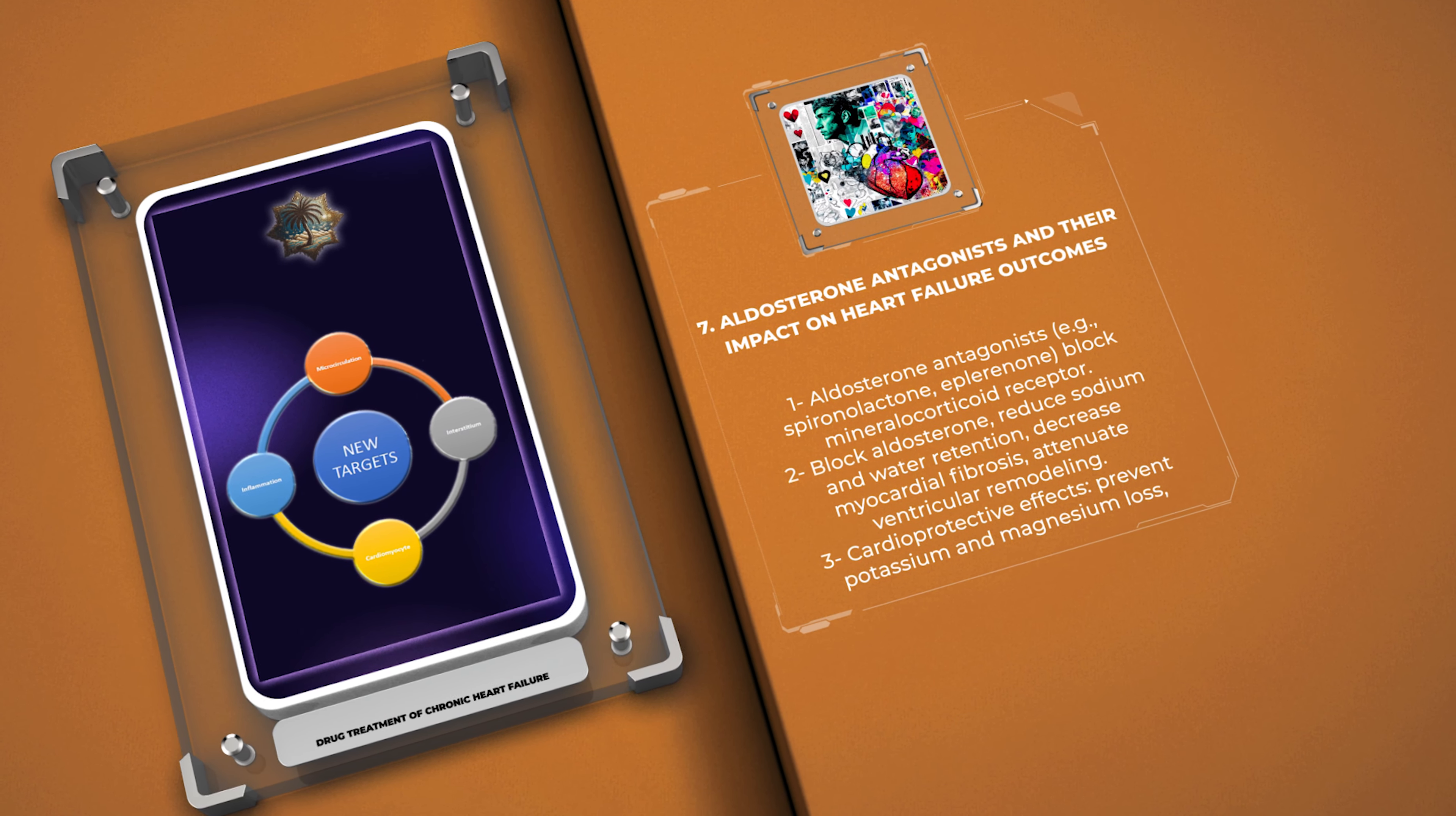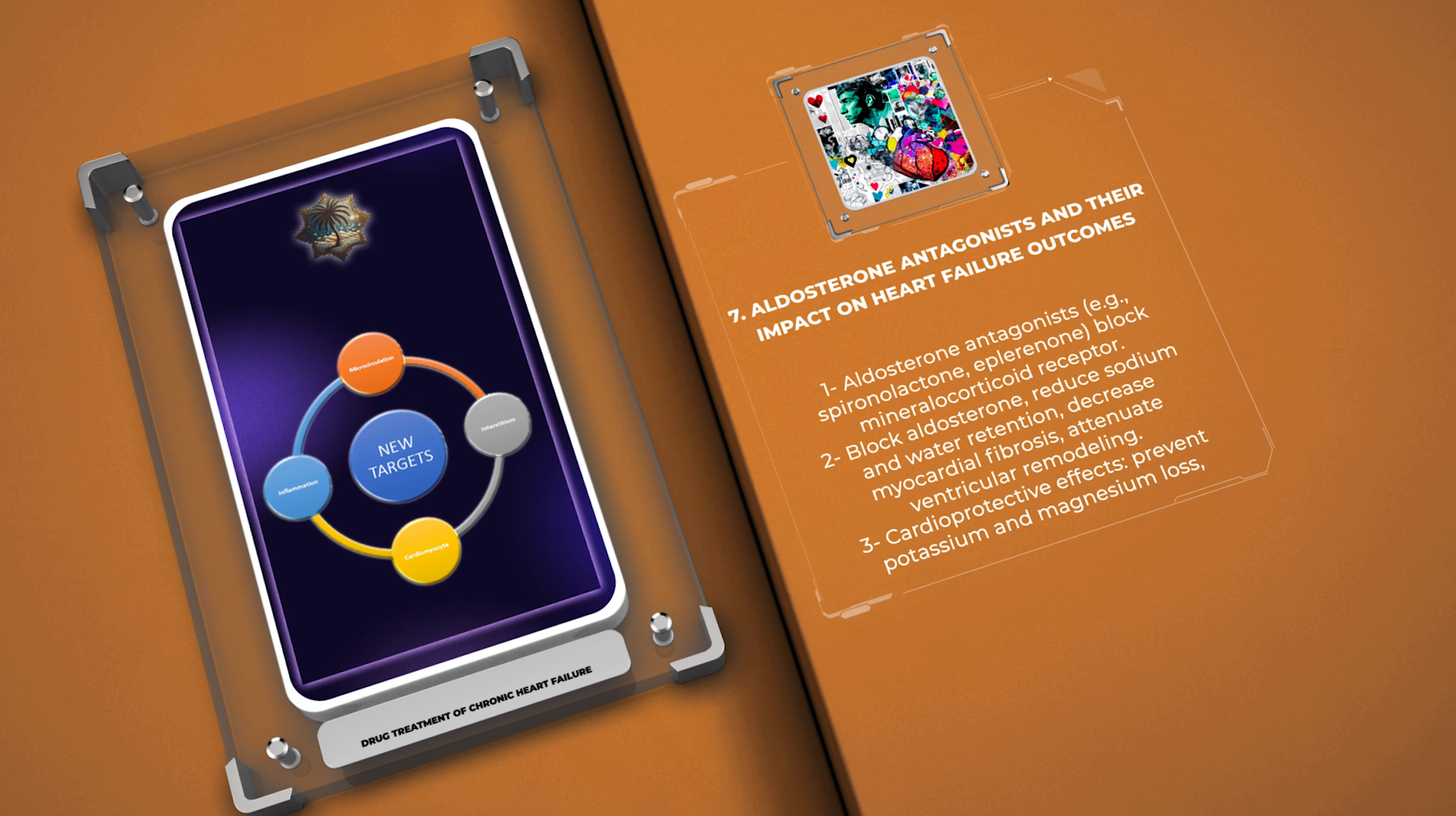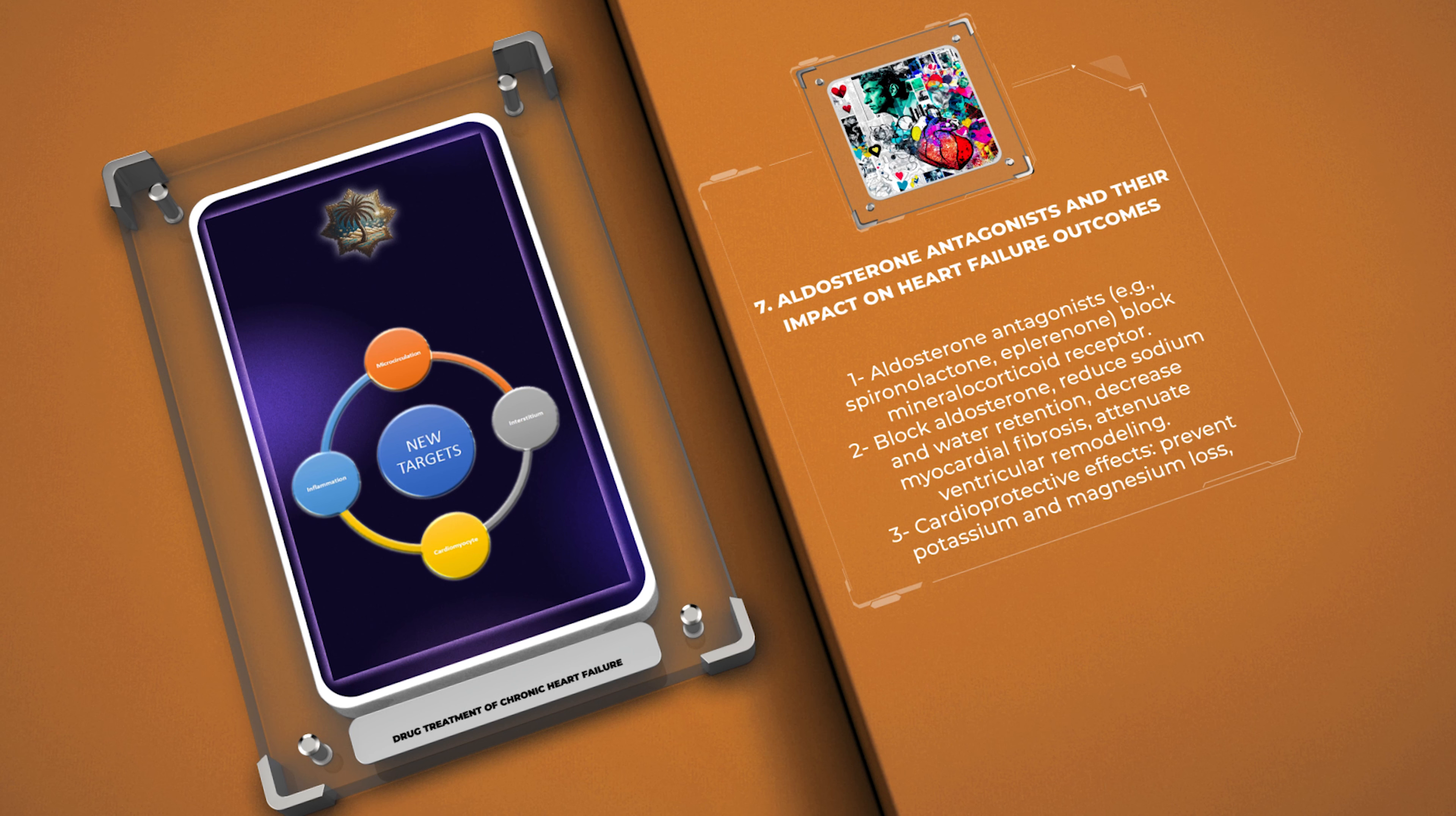By blocking aldosterone, aldosterone antagonists reduce sodium and water retention, decrease myocardial fibrosis, and attenuate ventricular remodeling. They also exert cardioprotective effects by preventing potassium and magnesium loss and reducing oxidative stress.